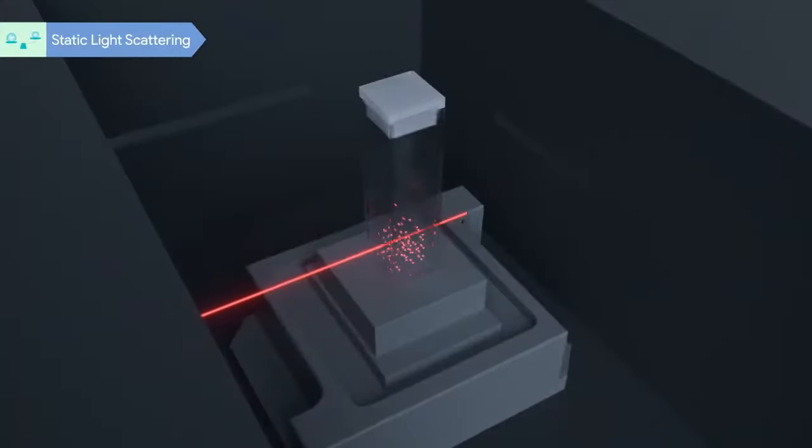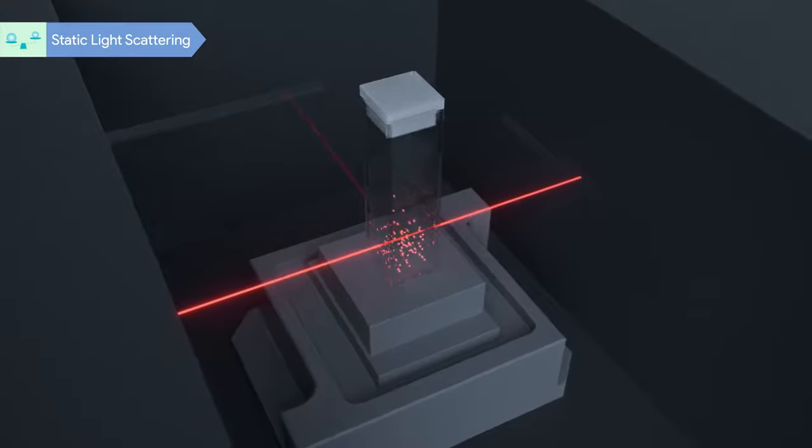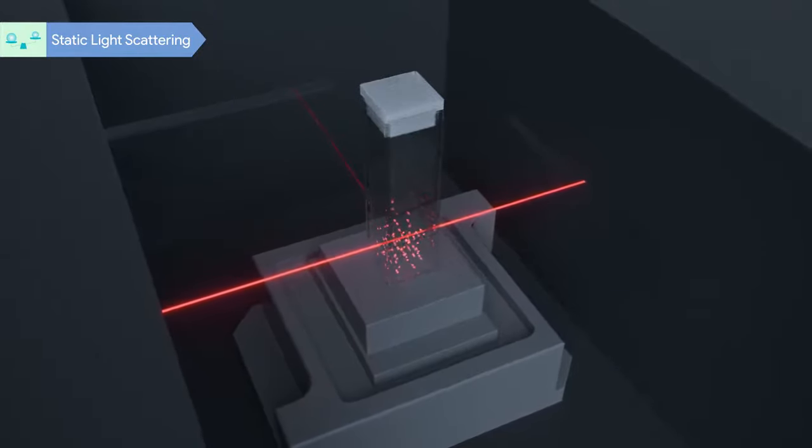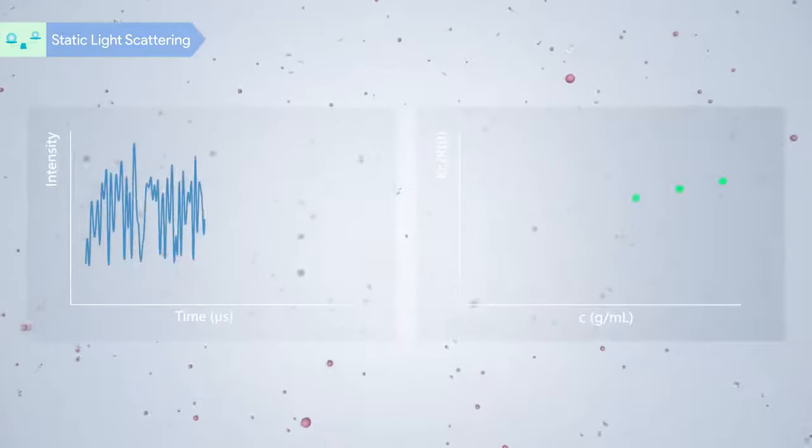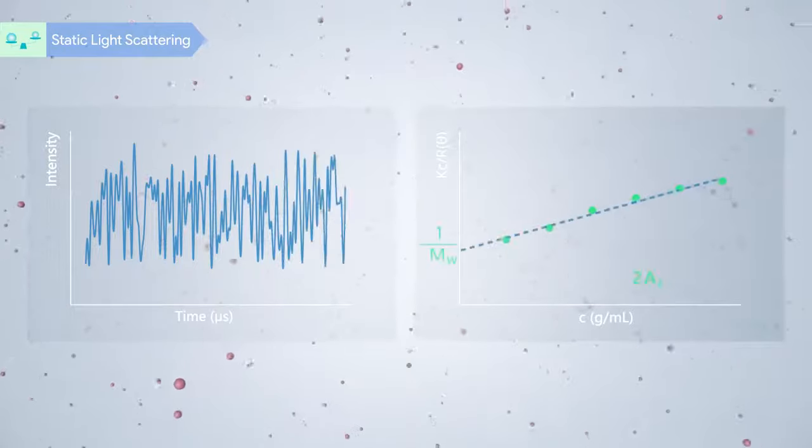SLS measures the molecular weight by detecting the scattered light intensity of a series of sample solutions with different concentrations. By Debye plot, the average molecular weight and the second virial coefficient can be calculated.